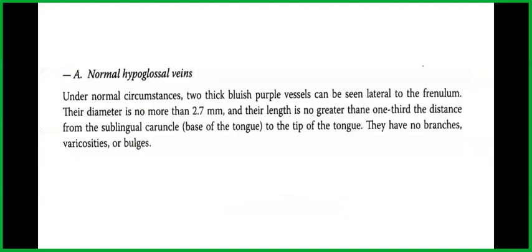Under normal circumstances, two thick bluish-purple vessels can be seen lateral to the frenulum. Their diameter is no more than 2.7 millimeters, and their length is no greater than one-third the distance from the sublingual caruncle — which is the base of the tongue — to the tip of the tongue. They have no branches, varicosities, or bulges.